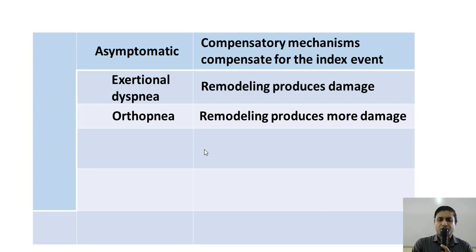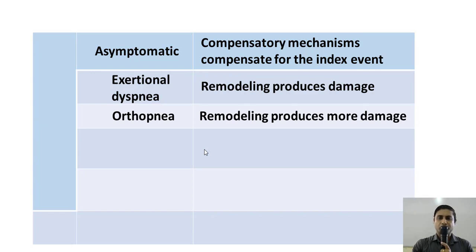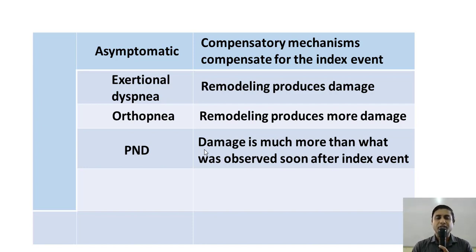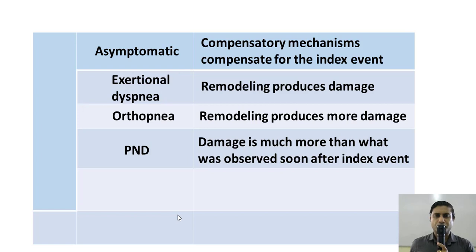Orthopnea means that the patient starts developing dyspnea in the recumbent position, and this dyspnea may be relieved by giving the patient a number of pillows and elevating the head end — making the patient propped up, sitting up, or even standing. As the remodeling process produces even more damage, a very particular form of dyspnea develops called paroxysmal nocturnal dyspnea. This may be defined as sudden awakening of the patient in the middle of the night, usually after a couple of hours of sleep, with severe anxiety, severe breathlessness — the patient may bolt upright in bed and run to an open window to gasp for breath.